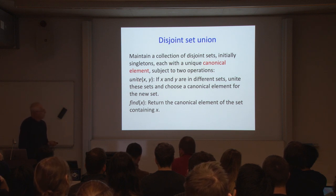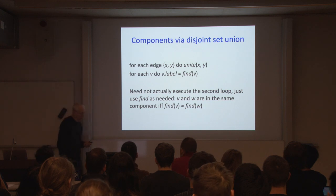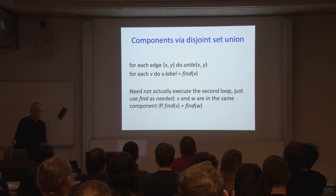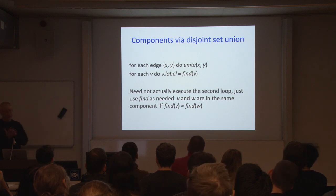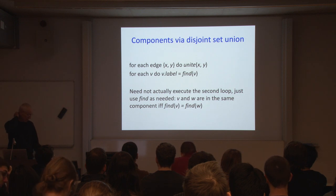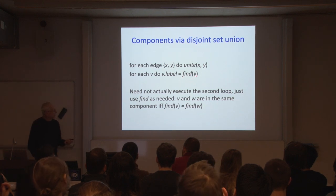How do we use disjoint set union to solve connected components? For each edge, we unite the ends of the edge — representing undirected edges as pairs of directed arcs. We start with all vertices in singleton sets, process each edge, and if it connects two vertices in different sets we merge them. At the end, we run over all vertices and define each vertex's label as the canonical element of its set.